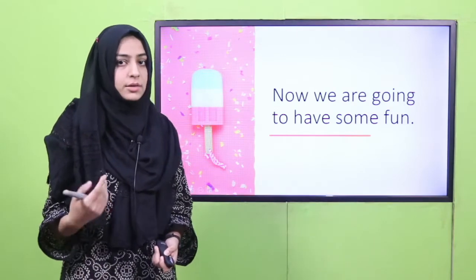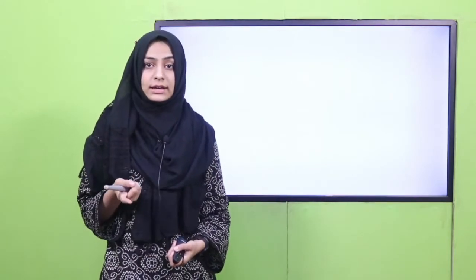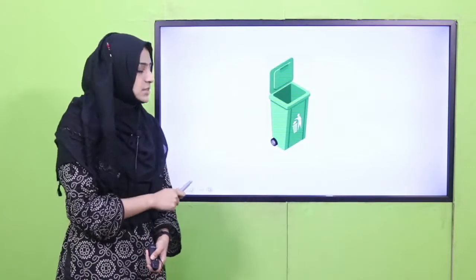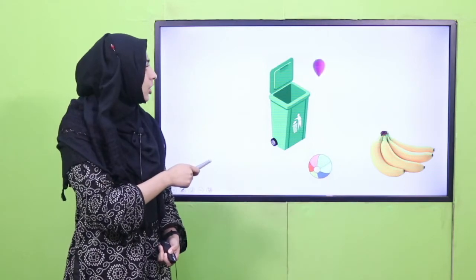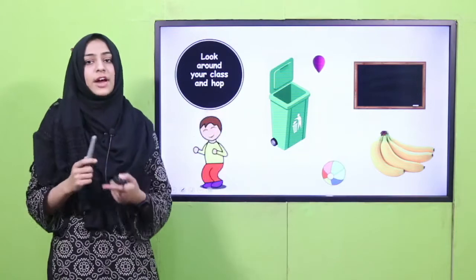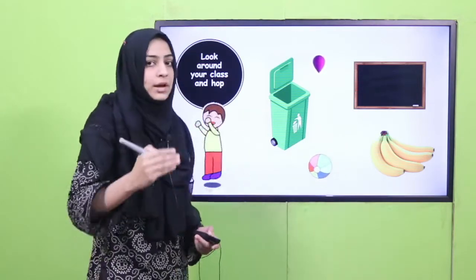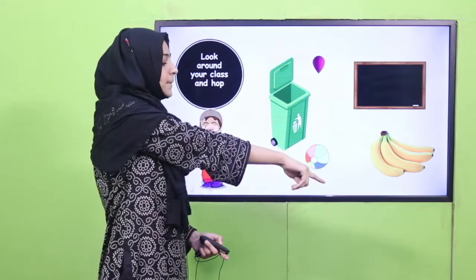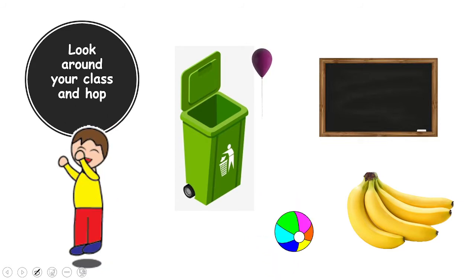Now we are going to have some more fun. First of all, I want all of you to get up. You were sitting in the groups before, lekin ab hum apni seats pe wapas jaate hain. Ab aap logon ne karna kya hai — look around your classroom aur aapne vahan dekhna hai ki kitni cheezein hain jo B se hain. If you can find a bin, a ball, a banana, a balloon, or a blackboard — ye saari cheezein main ne aapko show kar di hain. If you can find any one of them, what you have to do — you have to hop! Look around everyone. Your teacher will tell you one by one to point out the thing starting with B, and then hop. This is going to take a little time — aapki teacher video pause karengi and you are going to have this activity with your teacher.